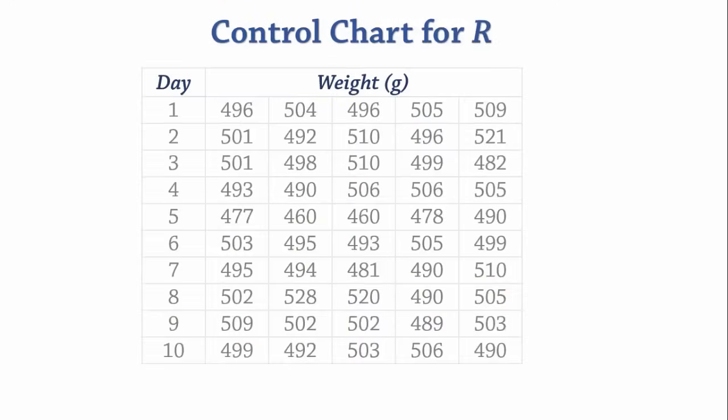In constructing a control chart for the range R, we will be using this process data consisting of weights of a snack pack specified as 500 grams. Samples of size 5 are collected every day for 10 days. Our objective is to determine if the process variability is in control.